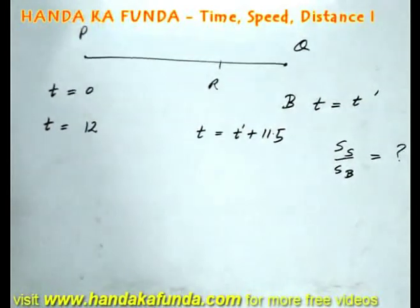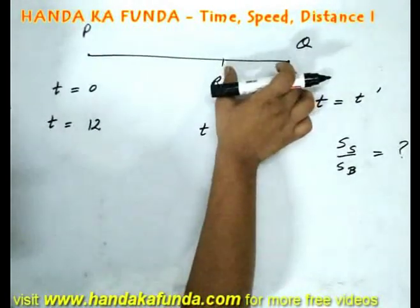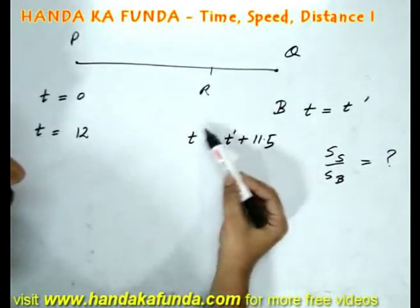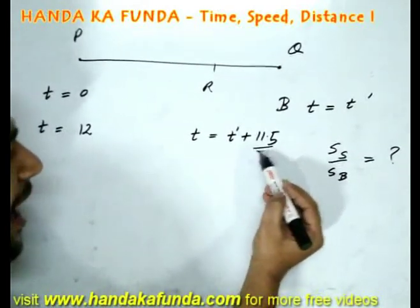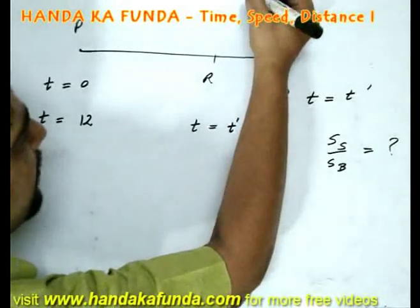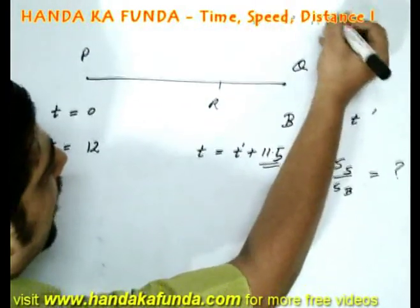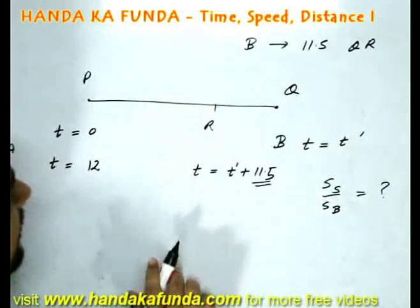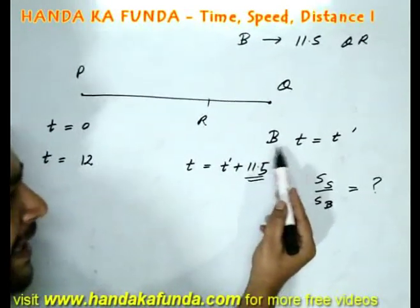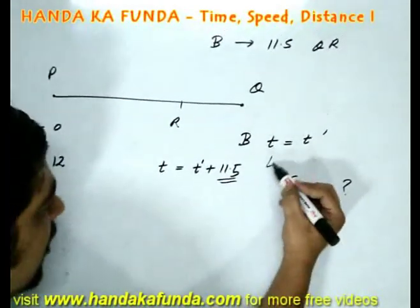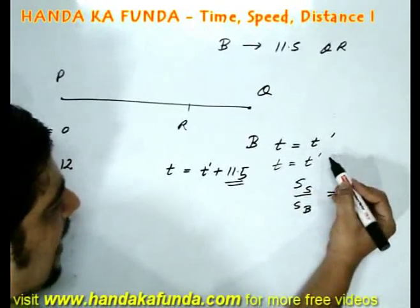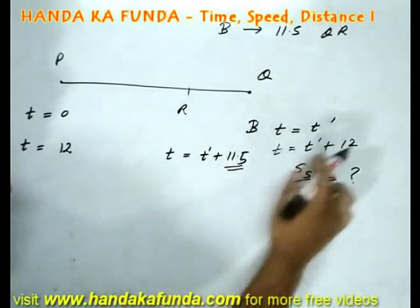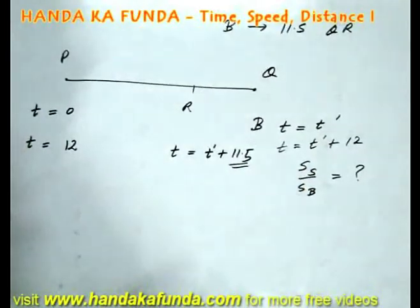Let us see how we do this. Think about the distance R-Q. The man has moved from Q to R in the time of 11.5 minutes. If the man B was standing at his original position, he would have heard the second bullet at T equal to T' plus 12. The bullets are fired at a gap of 12 minutes. He would have heard them at a gap of 12 minutes. But that did not happen.